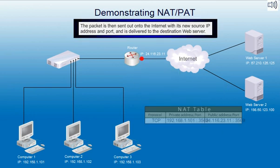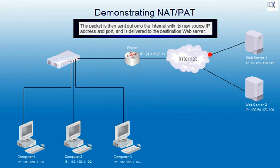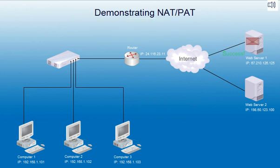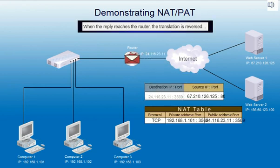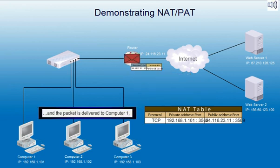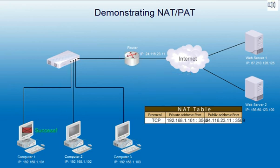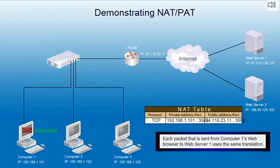The packet is then sent out to the Internet with its new source IP address and port and is delivered to the destination web server. The web server sends a reply. When the reply reaches the router, the translation is reversed and the packet is delivered to Computer 1. Each packet sent from Computer 1's web browser to Web Server 1 uses the same translation.